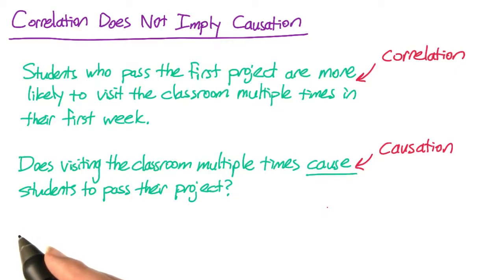For example, suppose Udacity sent emails to students during their first week reminding them to come back, and this caused more students to visit multiple times. Would you expect this to increase the number of students who complete their project? It certainly sounds plausible, but we can't be sure based on this data.